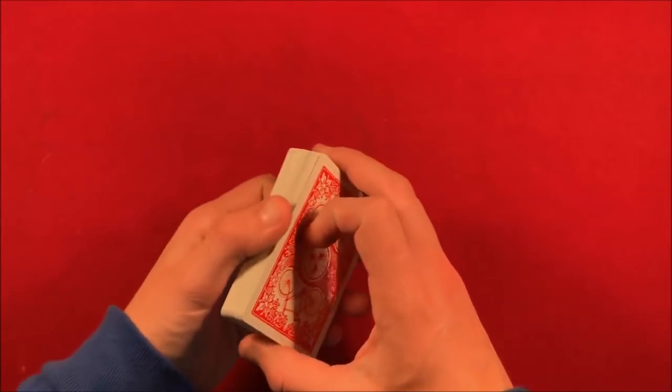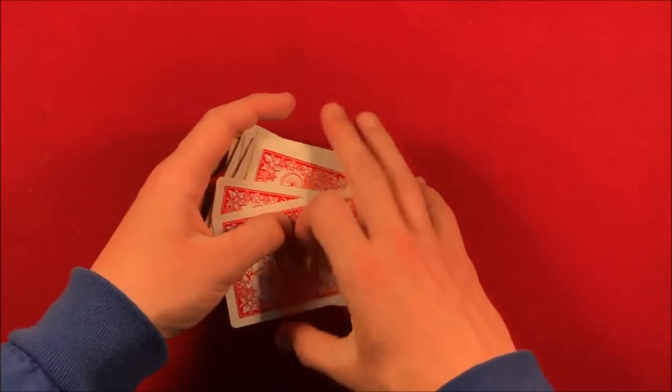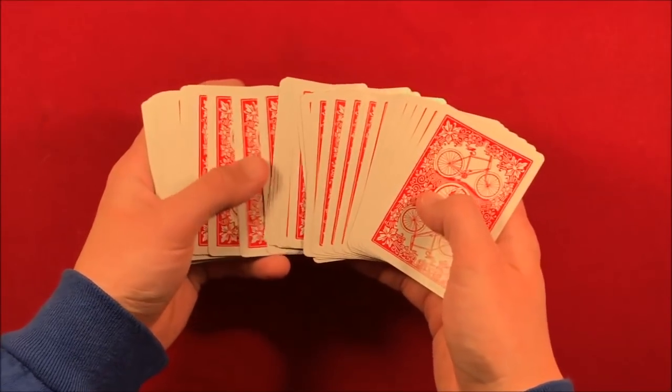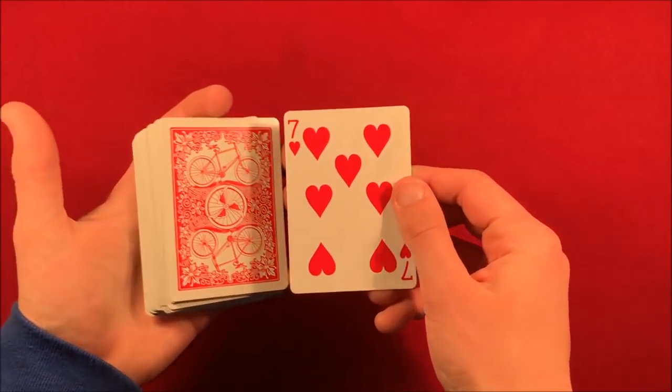First off, let's say he had Ellen just shuffle the cards. You can do this with a shuffled deck. Then he had her pick a card from the middle and had her sign it. In this case, let's say the seven of hearts.